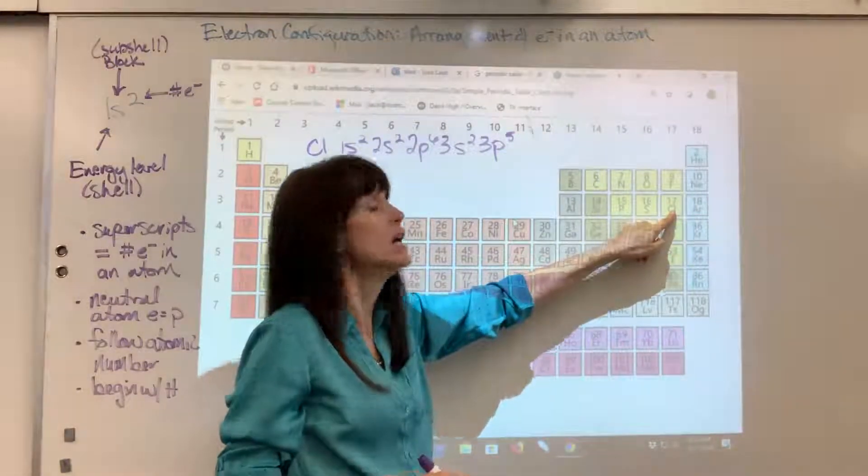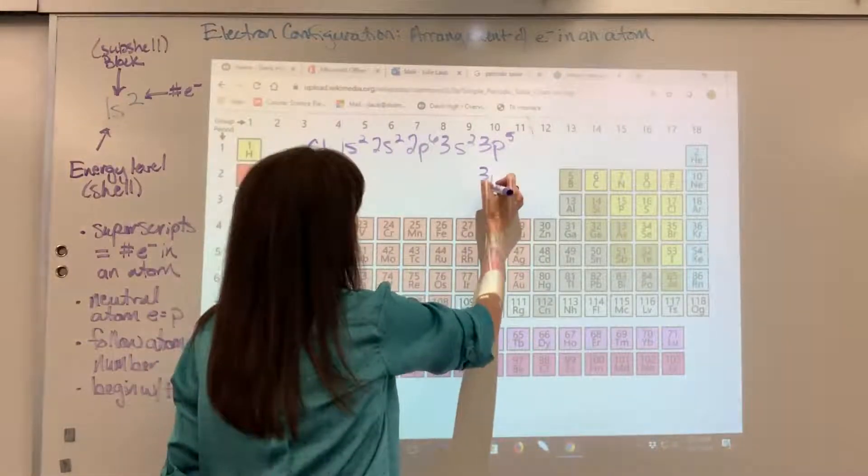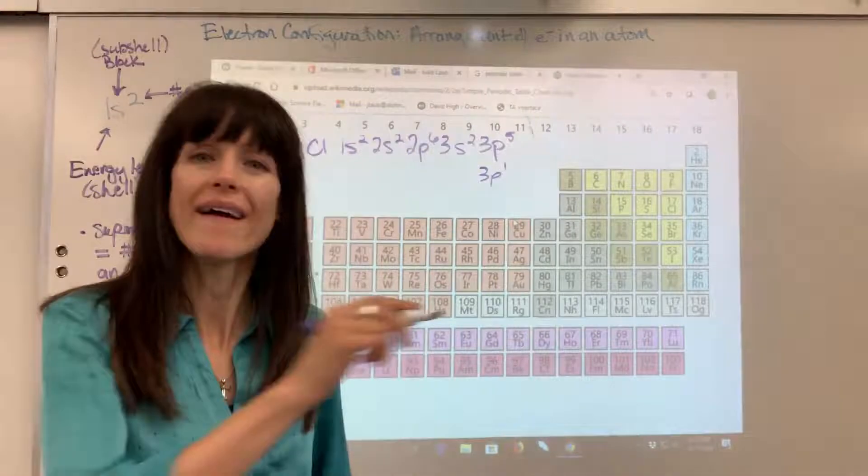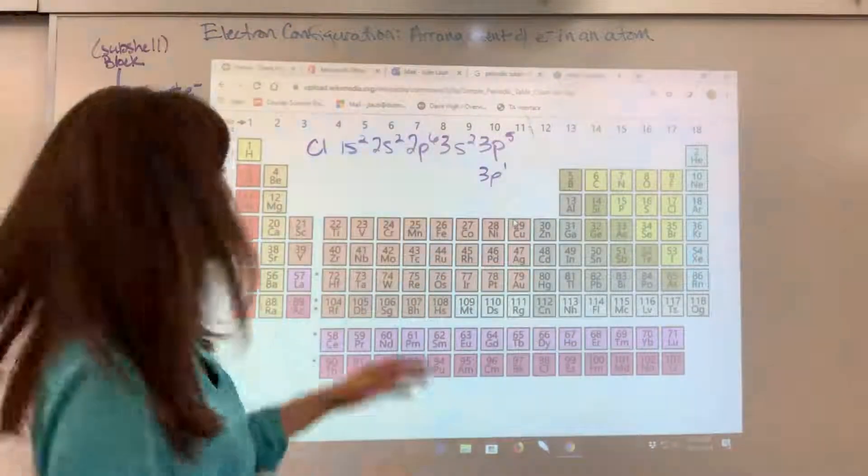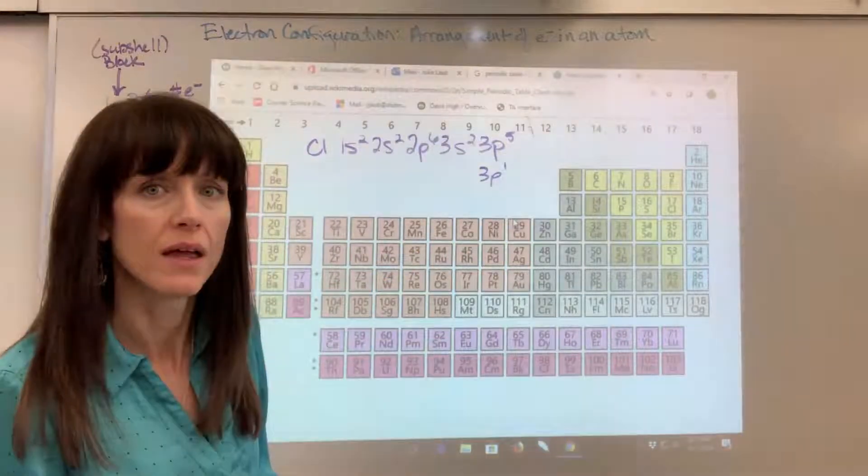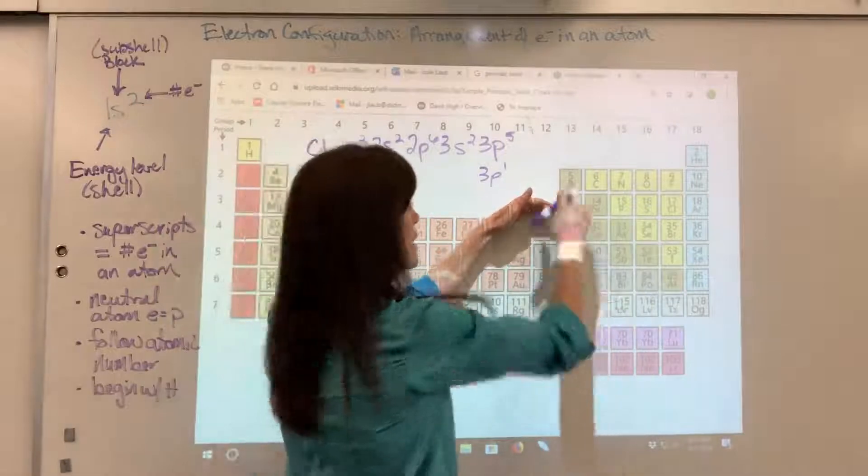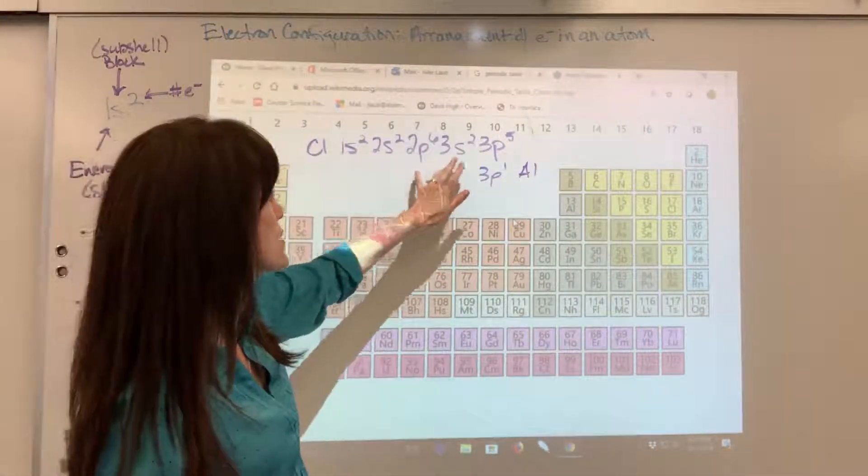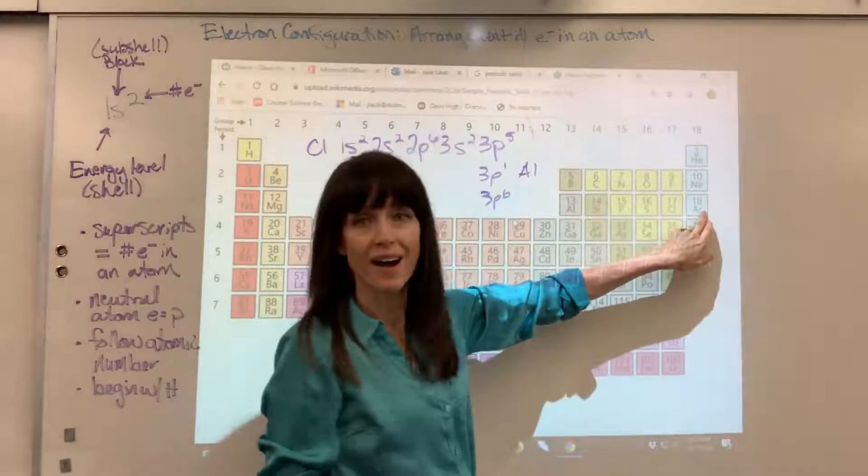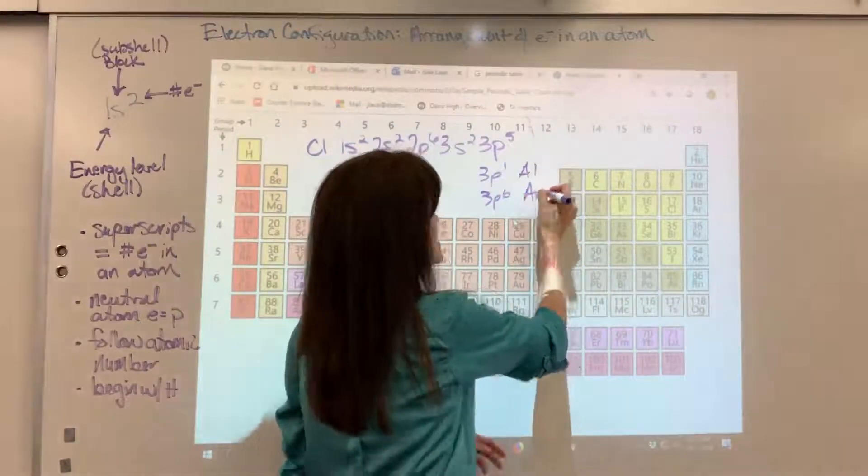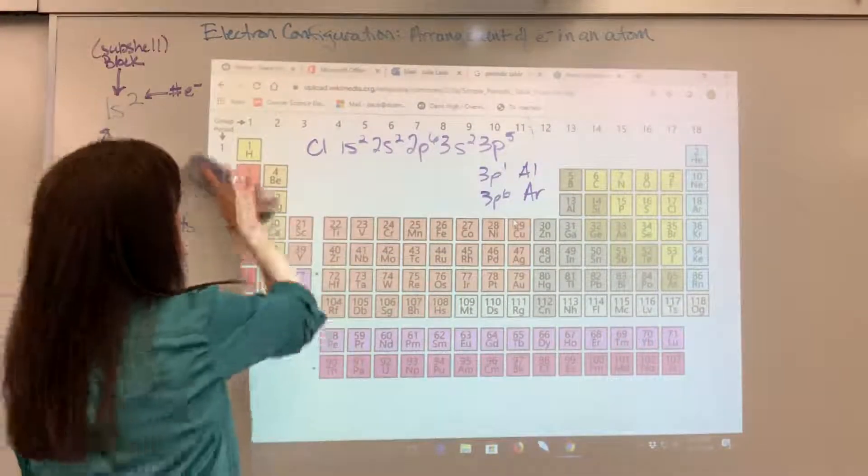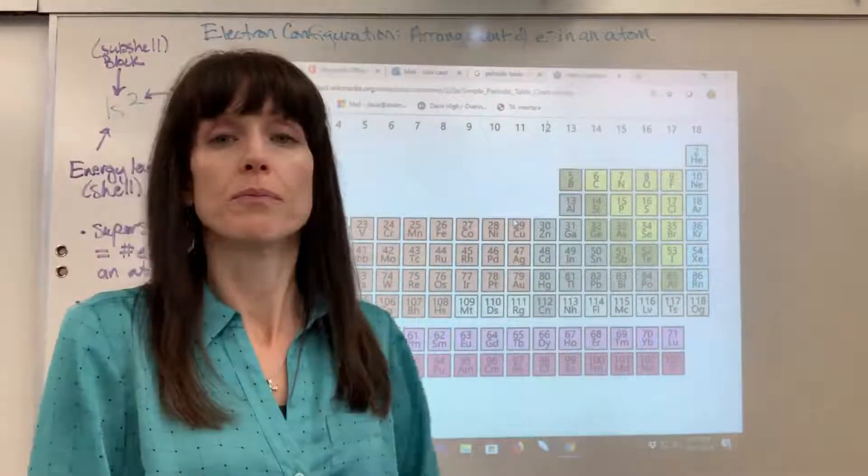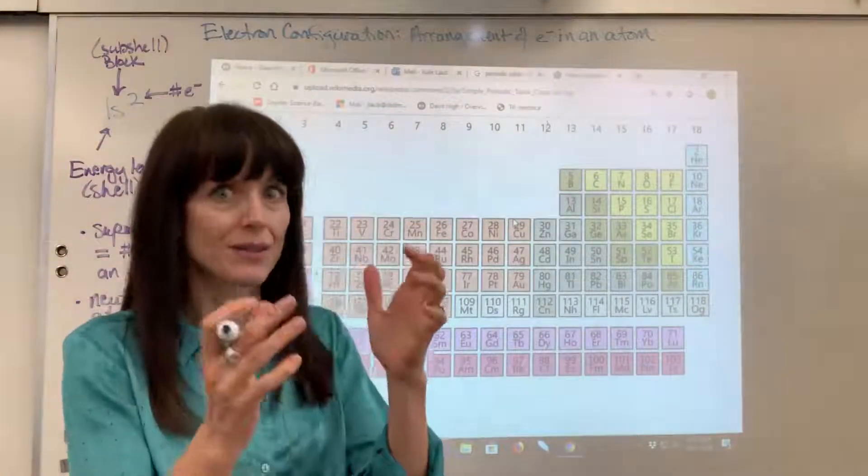Now I want to challenge you for just a second. What if I had only done 3P1? Sometimes students will hit the P and they'll just automatically do a one or a six. If I put a one right there, what element would that be the electron configuration for? If I did 1s2 2s2 2p6 3s2 3p1, what element is that? So third energy level right here, P block, one electron, that would actually be aluminum. Now let's change it again. What if I did 3p6? That would be argon. So that's the difference between those.